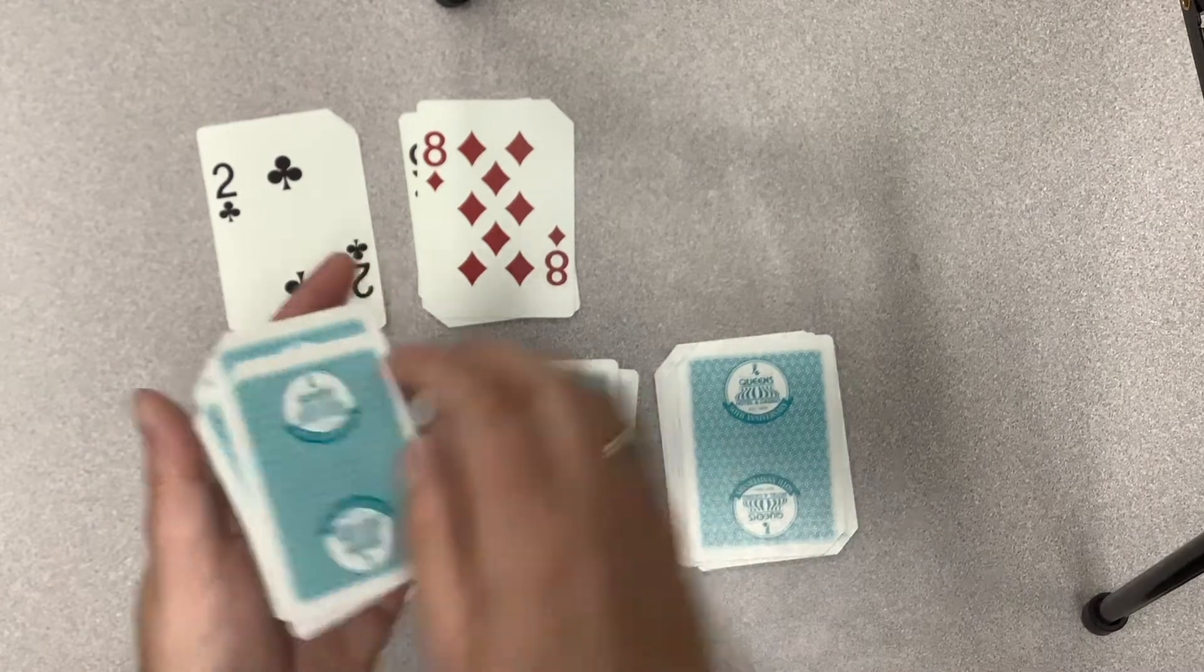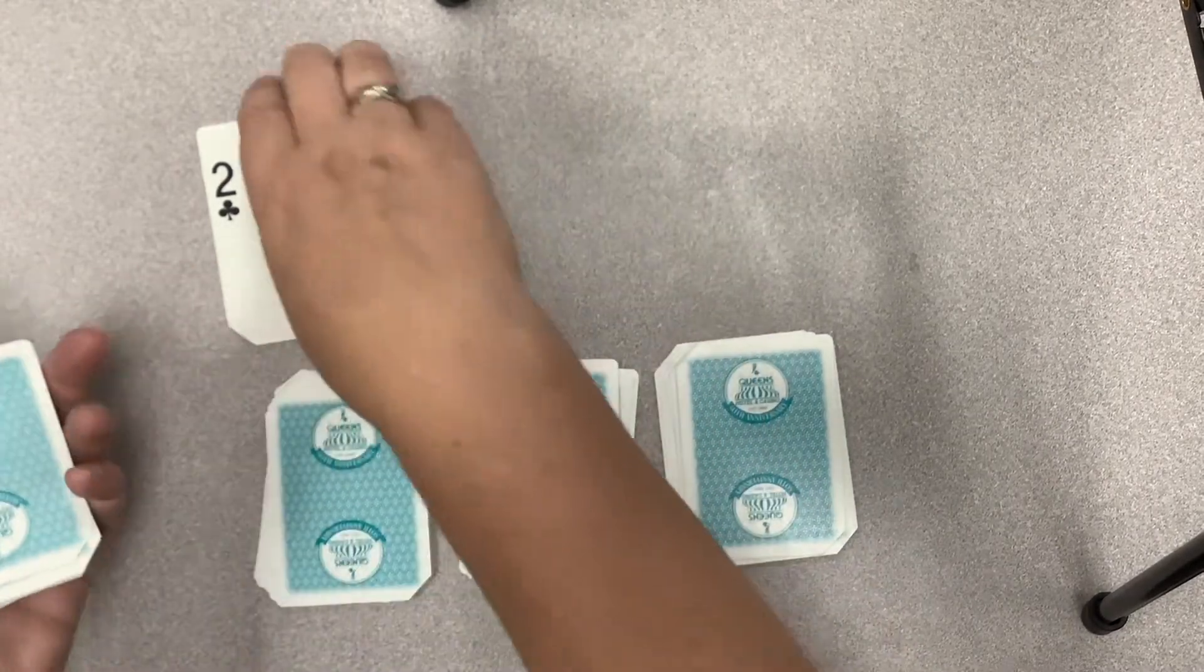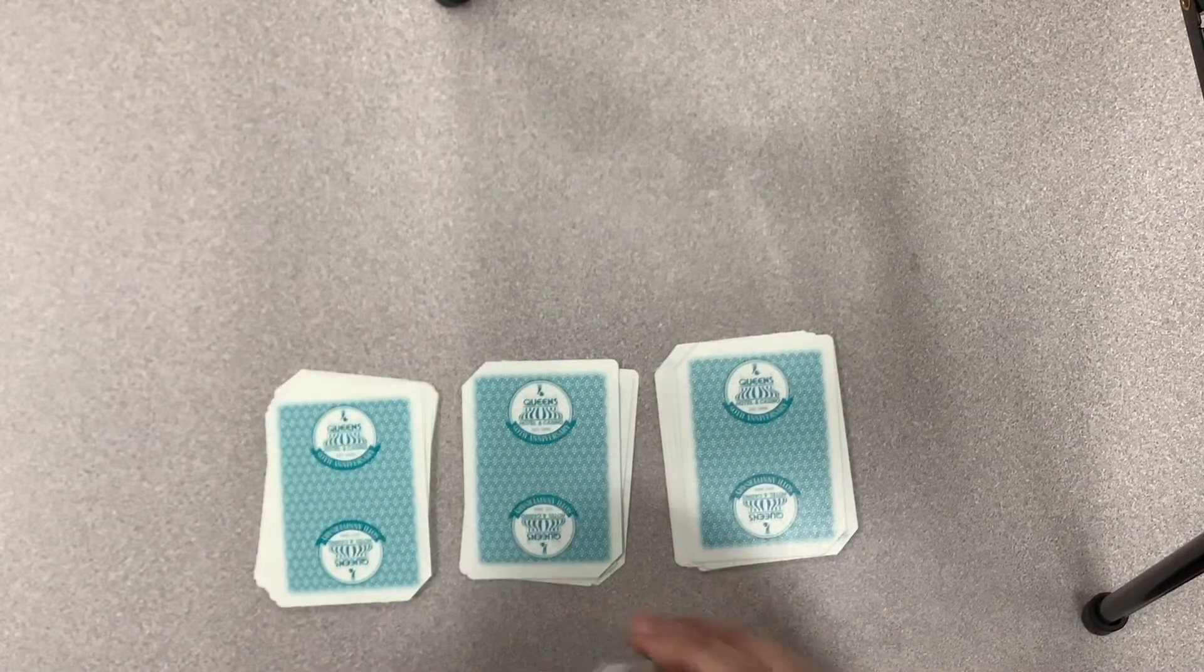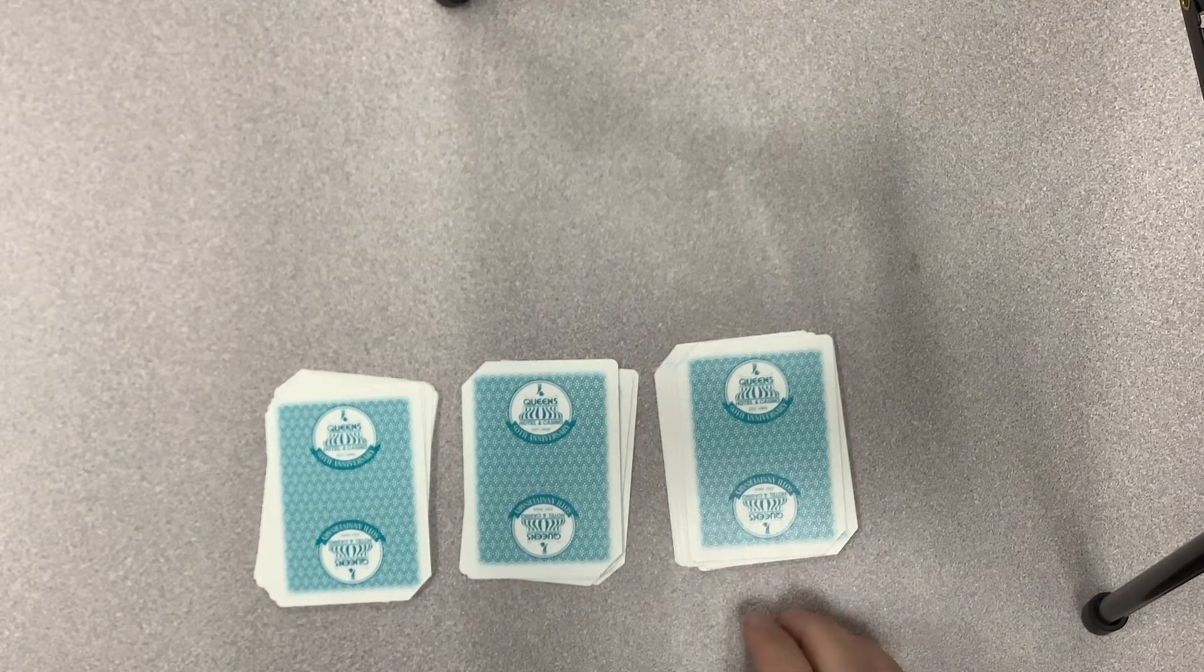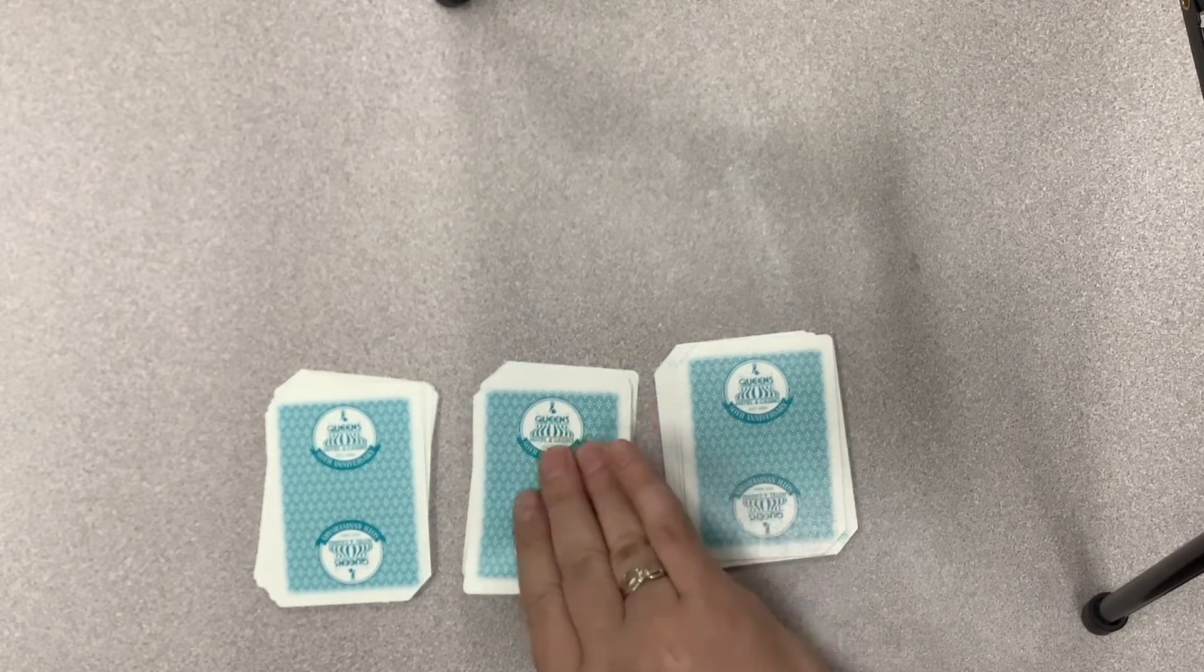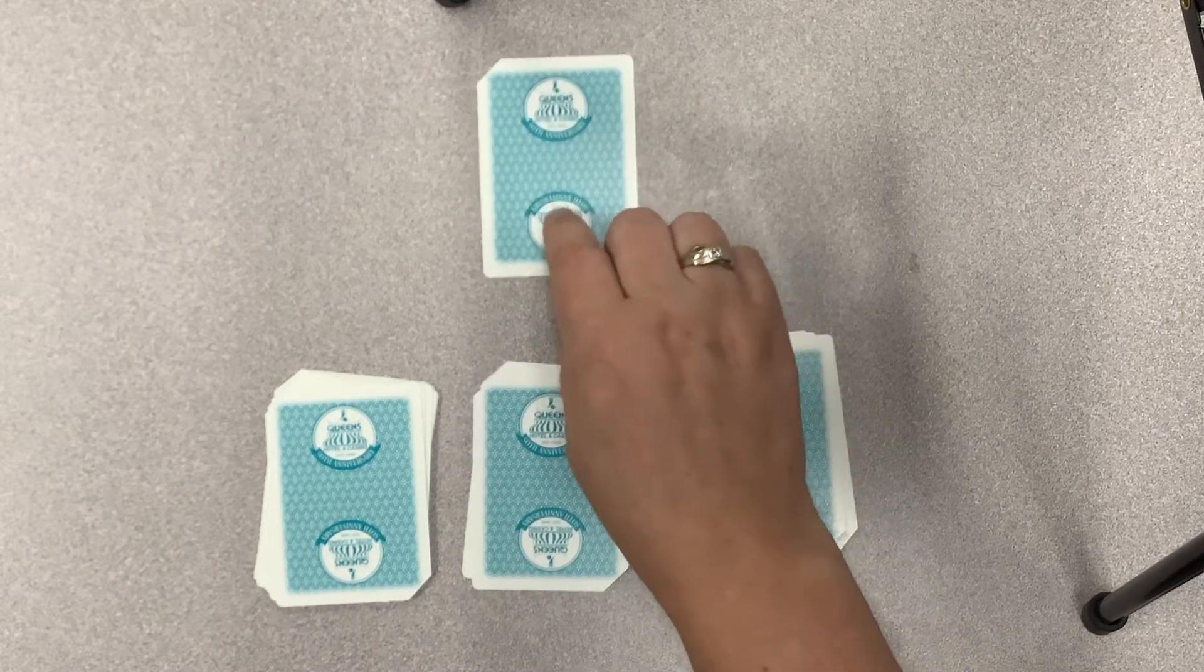Now the person who is having the card trick done to them will select one card to be theirs. So we'll say that they select this middle one and you have to watch which pile they take the card off of.